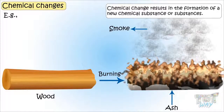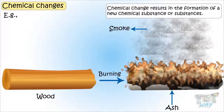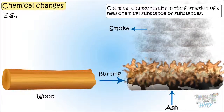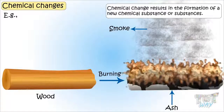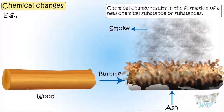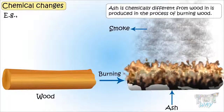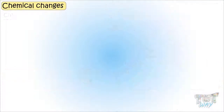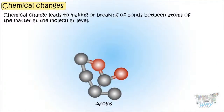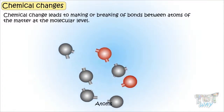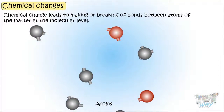For example, ash is chemically different from wood and is produced in the process of burning wood. Chemical change leads to making or breaking of bonds between atoms of the matter at the molecular level, because of which new chemical substances are formed.